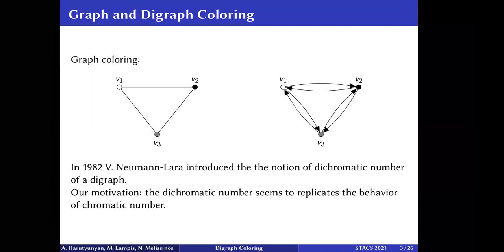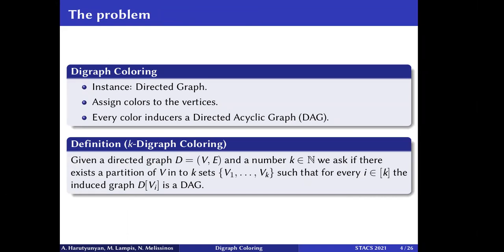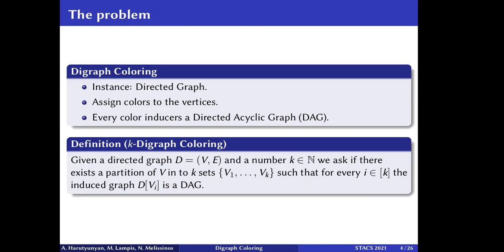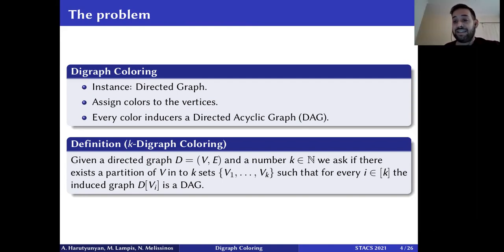One motivation for this work is the observation that the dichromatic number seems to replicate the behavior of the chromatic number in the field of digraphs. Interestingly, we managed to find a counter-example to that observation, specifically regarding parameterized results based on undirected tree width.